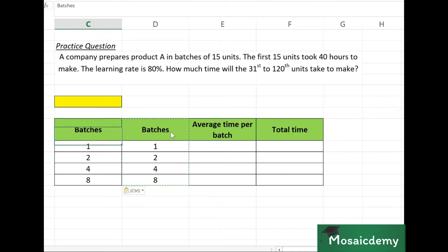We know that a batch is 15 units, so simply multiply the number of units per batch with the number of batches. So 15 into 1, 15 into 2, 15 into 4, and 15 into 8 gives us these number of units. Now it becomes simple.